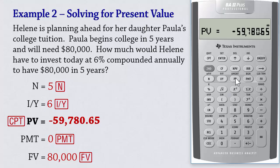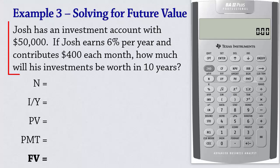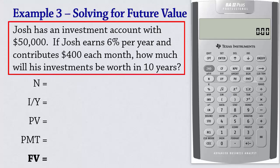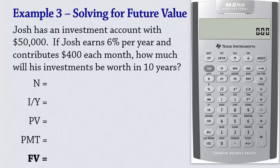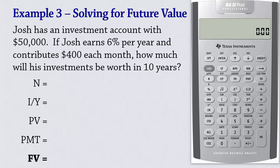Next, let's solve for future value. Josh has an investment account with $50,000. If Josh earns 6% per year and contributes $400 each month, how much will his investments be worth in 10 years? Note that interest is compounded per year, so interest will not be applied to the $400 monthly payment until after 1 year — that is, until the payments add up to 12 times $400, which is $4,800. In essence, we actually have 10 conversion periods over the 10 years.